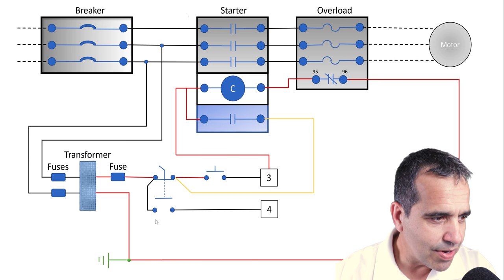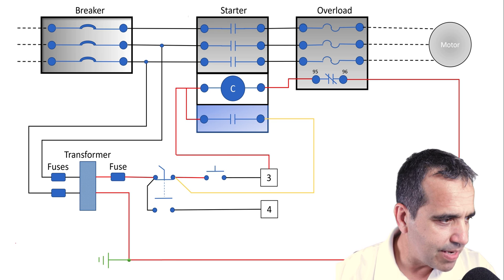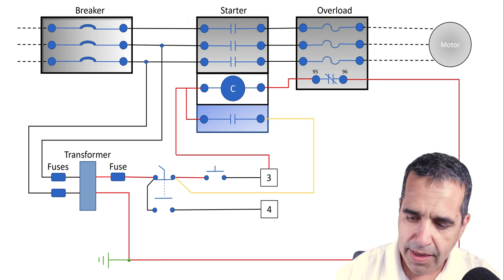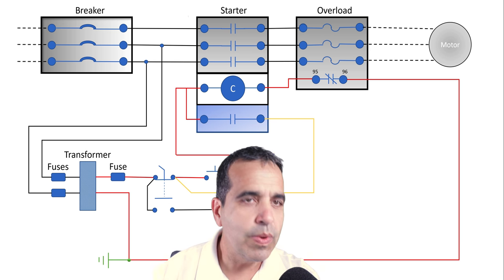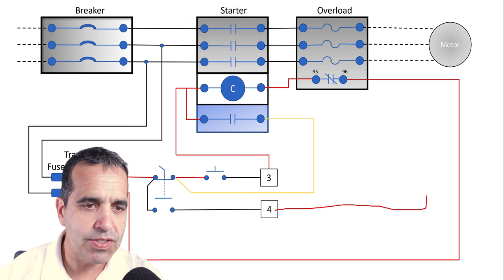Let me draw this. We would in the field come from number four, attach a wire to number four, and go out to the field. Let's draw a little loop here—we go out to the field.